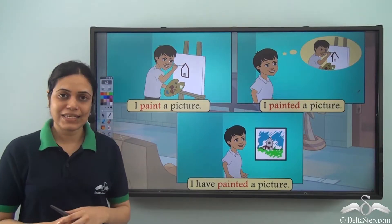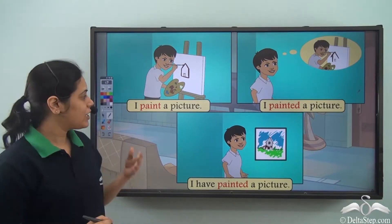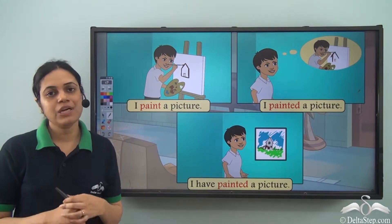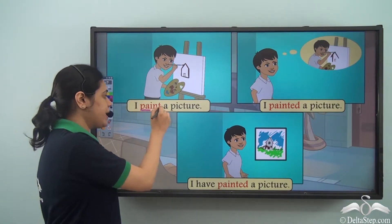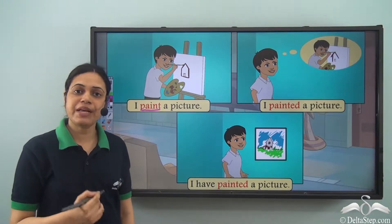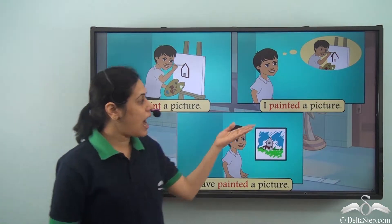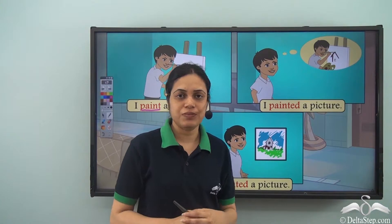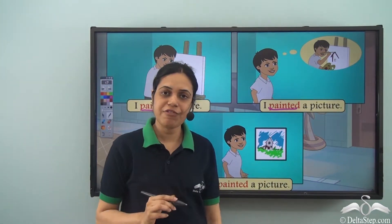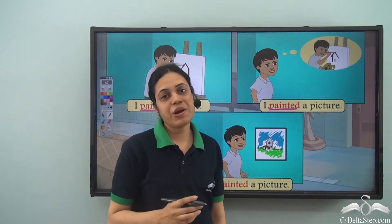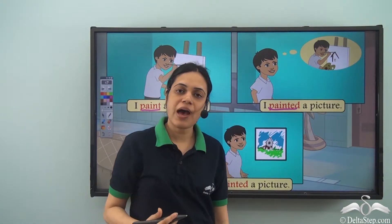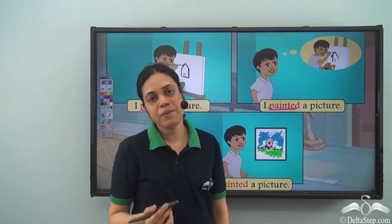Look at these sentences. 'I paint a picture.' In this sentence, paint is a verb representing present tense. 'I painted a picture.' In this sentence, painted is the verb representing past tense — an action which happened in the past.